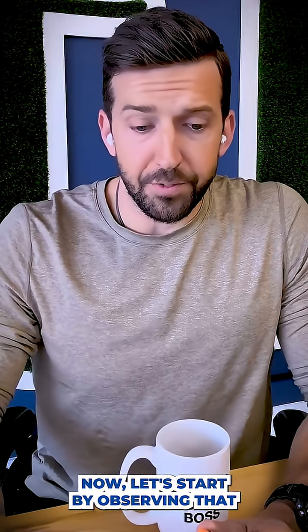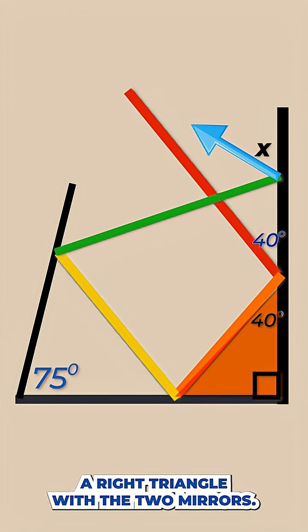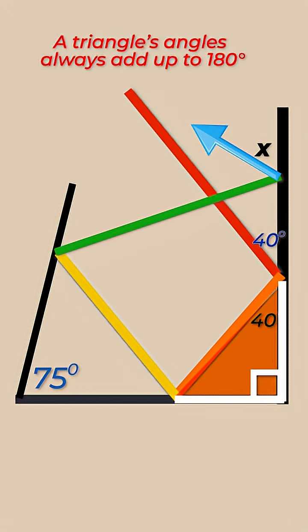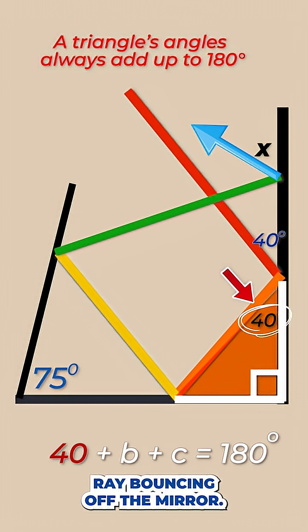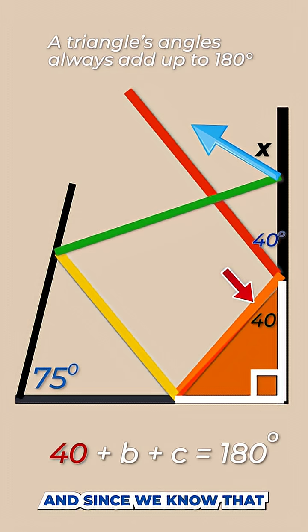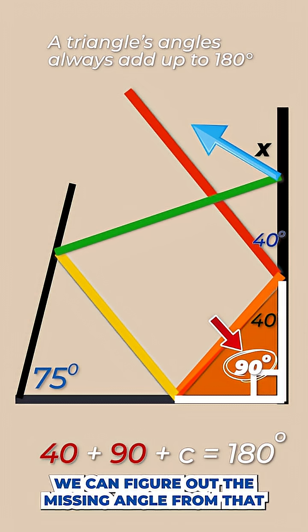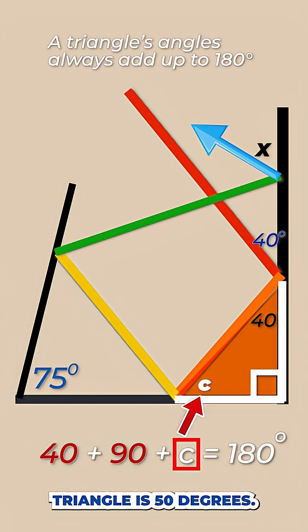Now let's start by observing that the orange ray creates a triangle, in fact a right triangle, with the two mirrors. And since we know one of the angles is 40 degrees, that's the light ray bouncing off the mirror, and since we know that the two mirrors meet at an angle of 90, we can figure out the missing angle from that triangle is 50 degrees.